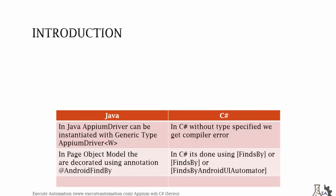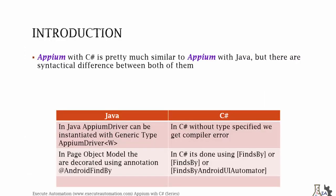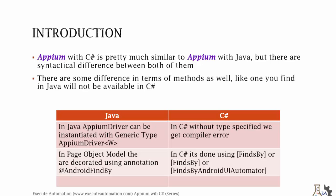Introduction to Appium with C-Sharp is pretty much similar to Appium with Java, but there are syntactical differences. For example, in Java the AppiumDriver can be instantiated with or without a generic type — like AppiumDriver of IWebElement — but in C-Sharp, without the type specified, you will get a compiler error, so the type has to be specified.